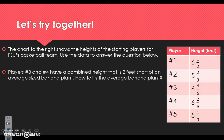Let's take a look at this problem together. The chart to the right shows the heights of the starting players for FSU's basketball team. Use the data to answer the question below. Before we answer any questions, we need to make sure that we have a common denominator. I can already see that we have denominators of 2, 3, 6, 6, and 3, so we need to figure out a common denominator for those three numbers.